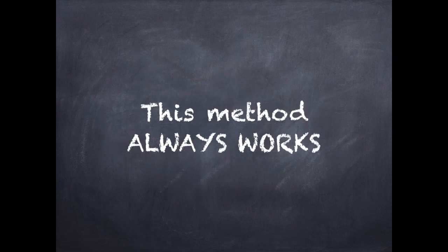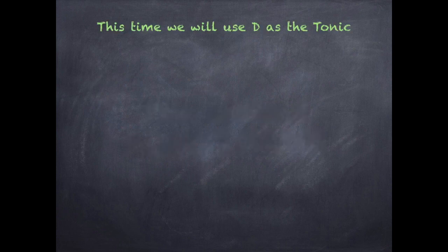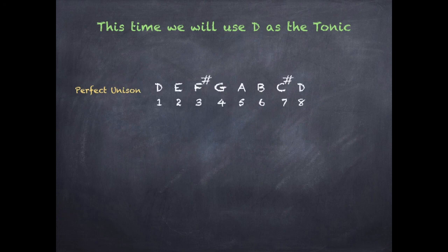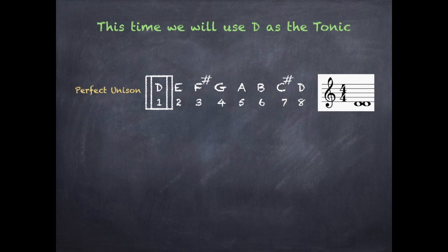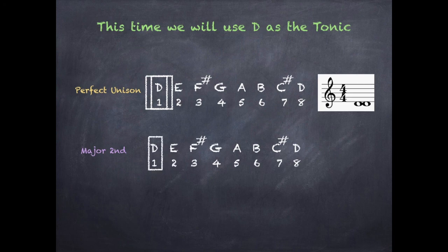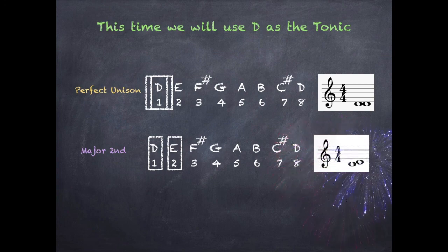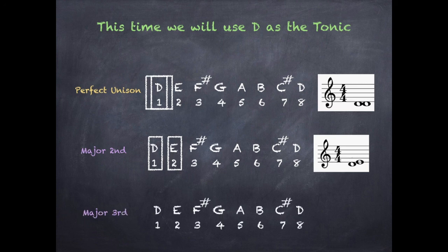This method always works. This time we'll use D as the tonic to prove it. Perfect unison: I repeat the first note of the D major scale twice and place them next to each other on the stave. A major second goes from D to E, stacked on the stave. A major third goes from D to the third note, F sharp, and I stack them on top of each other.